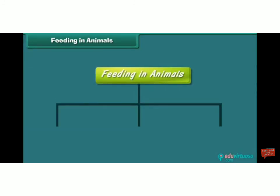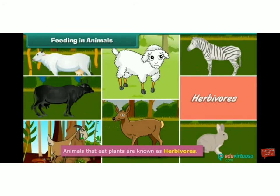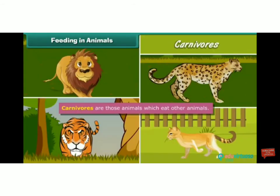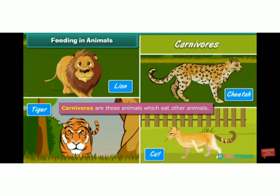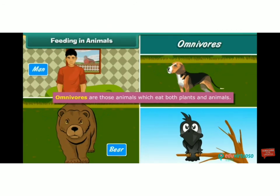In this way, animals are maintaining the balance in the environment. According to feeding habits, they are divided into three categories: herbivore, carnivore and omnivore. Herbivores eat only plants, such as cow, buffalo, goat, sheep, deer, zebra and rabbit. Carnivores eat other animals — they eat flesh, such as lion, tiger, cheetah and cat. Omnivores eat both plants and animals, such as humans and bears.